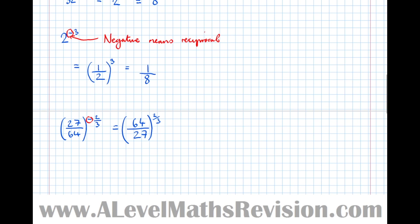So it equals (64/27) to the power of two-thirds. The bottom is the root, so we take the cube root of 64/27: the cube root of 64 is 4 and the cube root of 27 is 3, giving four-thirds. We still have the power of 2 to deal with, so we square four-thirds to get 16/9 as the answer.